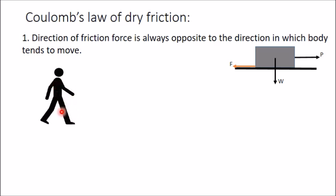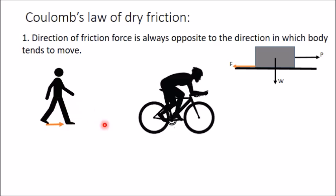We also experience friction in daily life. During walking, we push the road backwards and because of that friction force acts in the forward direction, allowing us to move forward. In a bicycle, using sprockets and chain we transfer torque to the rear wheel in the clockwise direction. Because of this clockwise moment, friction force at the rear wheel acts in the forward direction, which is what propels the cycle and rider forward.